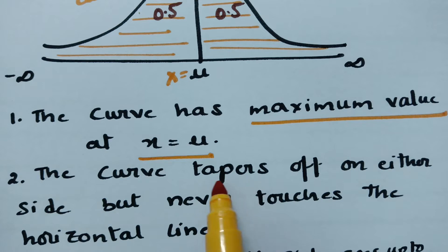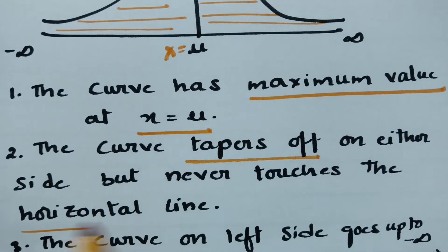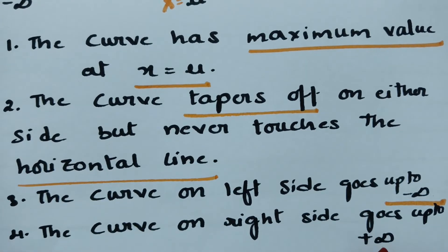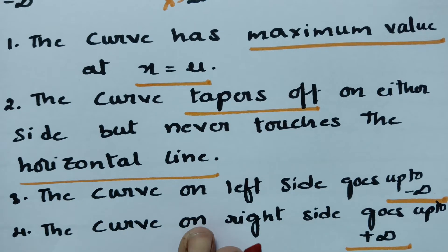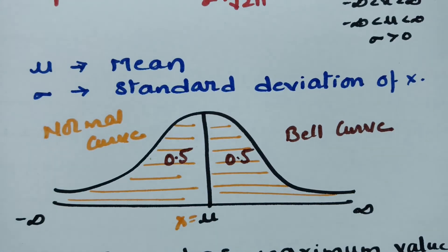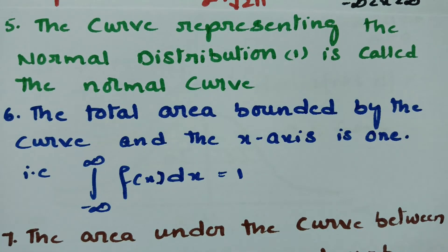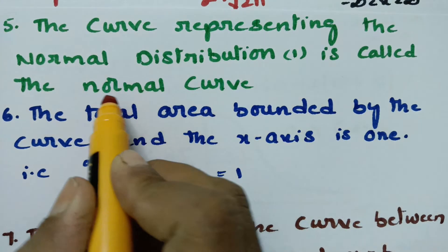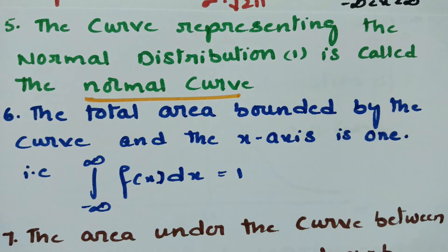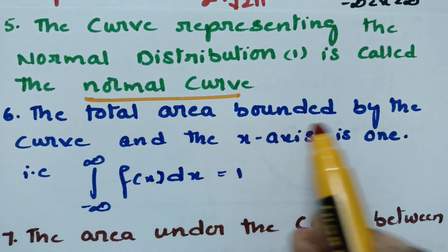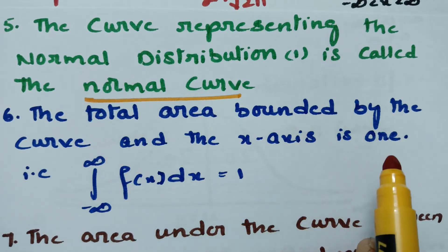The curve tapers off on either side but never touches the horizontal line — that is the second property. The curve on the left side goes up to −∞ and the curve on the right side goes up to +∞. The curve represents the normal distribution and is called a normal curve or bell curve due to its bell shape. The total area bounded by the curve and the x-axis is 1.